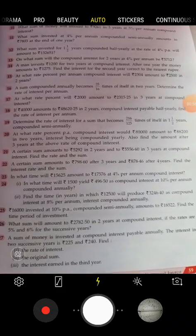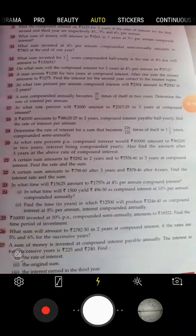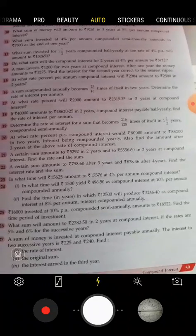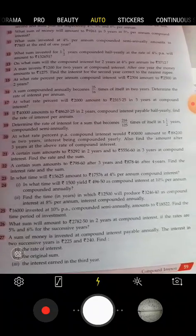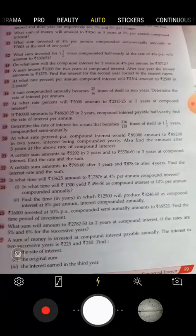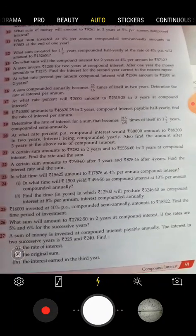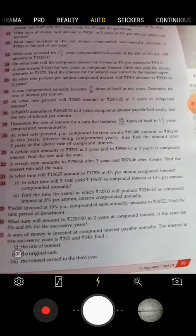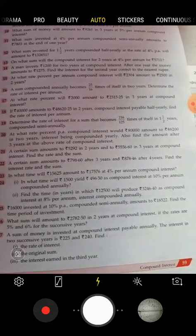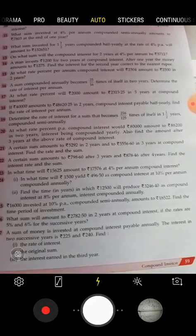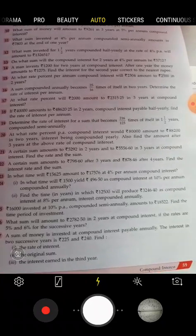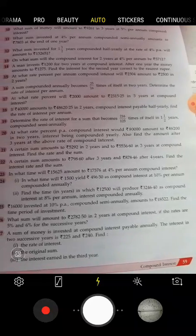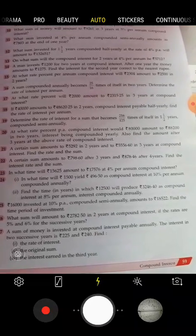Question number 16: A sum compounded annually becomes 25/16 times of itself in two years. Determine the rate of interest. Given that the principal is x, then the amount is 25/16 x. If the principal is x, then 25/16 x will be your amount. Time period is given two years, and we are going to find out R.